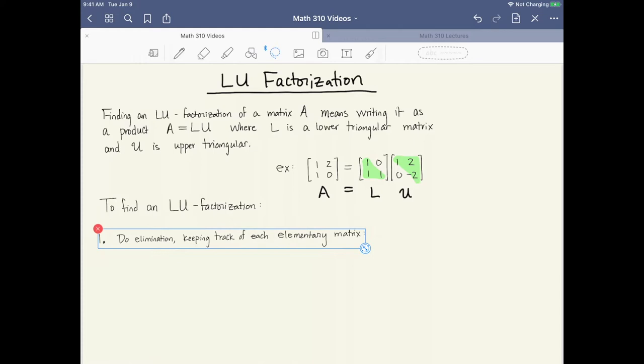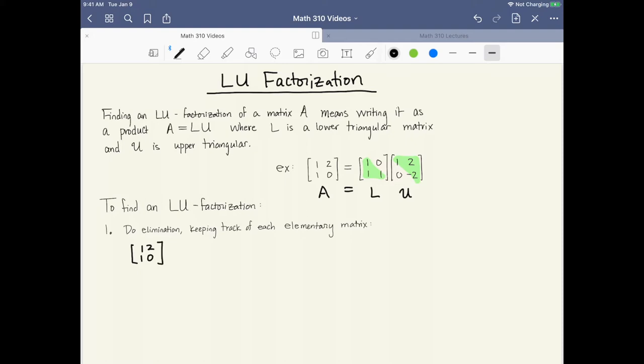In the first step we're going to be doing Gaussian elimination, keeping track of each step that we do with elementary matrices until we've produced an upper triangular matrix. That will give us U. In the second step we're going to be using the inverses of those elementary matrices to assemble the lower triangular matrix L. So let's now do that for this example. The first step is to do Gaussian elimination, keeping track of the elementary matrices. So our matrix here is [1, 2; 1, 0], and the row operation that I'm going to perform is minus row 1 plus row 2 into row 2. As I do this row operation the first row is unchanged and the second row becomes [0, -2]. It only took one row operation to produce something that's upper triangular. So this becomes my matrix U.